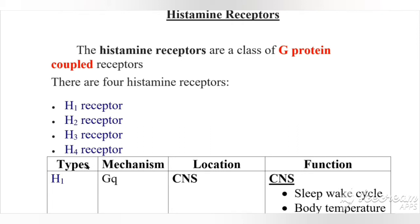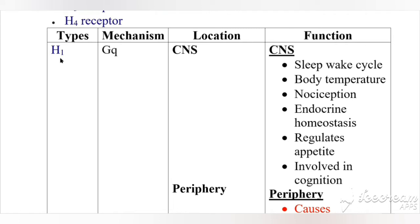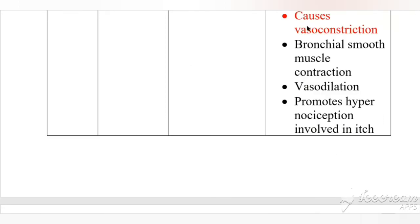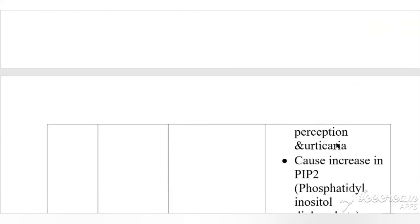We'll now see the types of histamine receptors with their mechanism, location, and function. The first is the H1 receptor, which is coupled with the Gq protein. It is located in the CNS and periphery. In the CNS, H1 is responsible for the sleep-wake cycle, body temperature, nociception, endocrine homeostasis, appetite regulation, and cognition. In the periphery, it causes vasoconstriction and bronchial smooth muscle contraction, vasodilation, and promotes hypernociception.